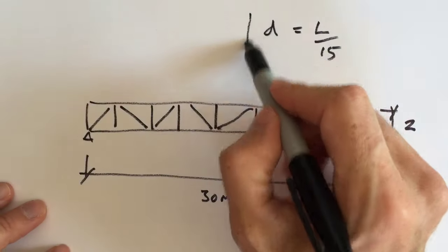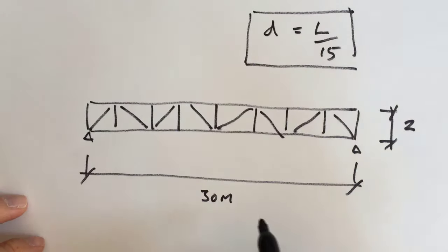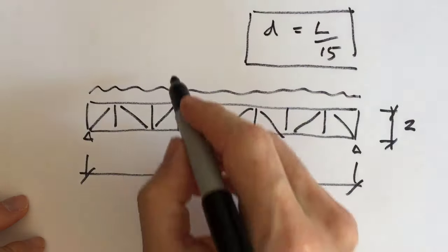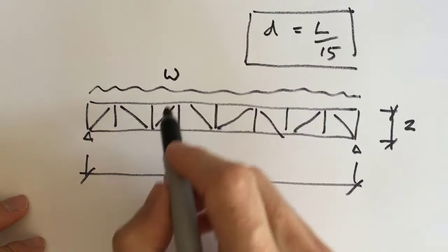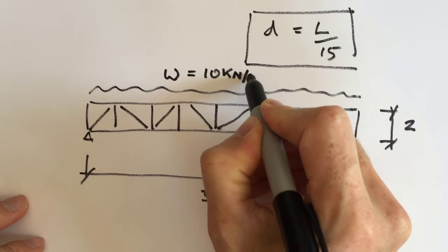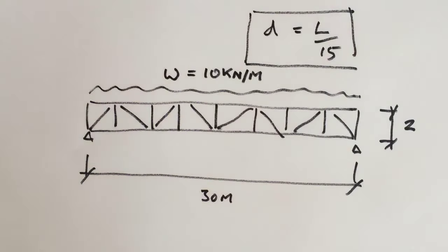The second thing, the second formula, is if you have a load on here, so there's a distributed load on the top, call it W, and it's equal to 10 kilonewtons per metre. Now I use kilonewtons per metre, that's SI units, if you're designing in Europe. You can obviously take, if you're in America, you can change that to the units that you need. So we've got 10 kilonewtons per metre as a UDL.